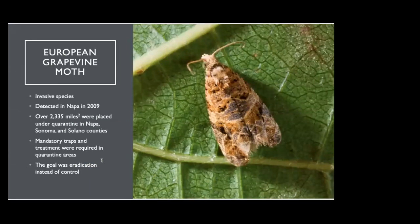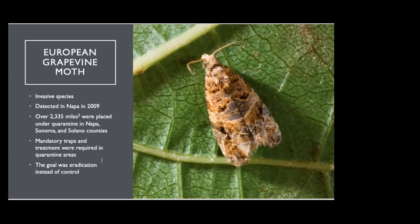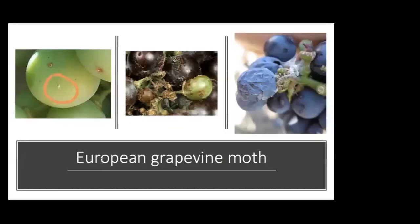EGVM, also known as European grapevine moth, is an invasive species first detected in Napa in 2009. Over 2,000 square miles were placed under quarantine; mandatory traps and treatment were required, and the goal was eradication, which was declared in 2016. But trapping for EGVM still continues today because it is a major pest. The eggs are very small — you can see an egg on a berry in the photo. They are laid singly on berries or flower parts. Larvae feed on flowers, green berries, and ripe berries, tunneling through the fruit and leaving webbing and excrement. Feeding on ripe berries opens the fruit to fungi and bacteria causing fruit rot. This invasive pest has been eradicated and hopefully will never be reintroduced.